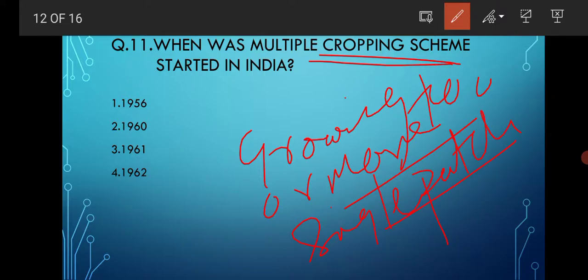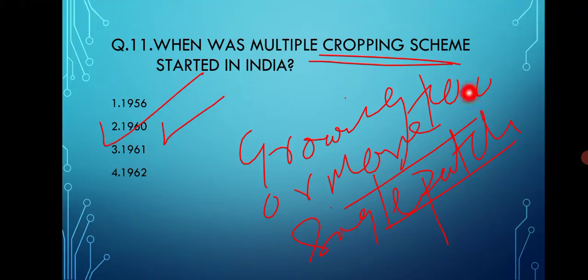Multiple cropping involves growing two or more crops in a single patch of land. The Multiple Cropping Scheme was started in option number two, that is 1960.